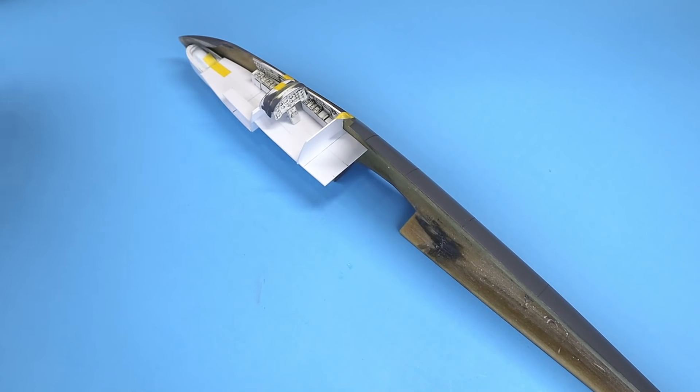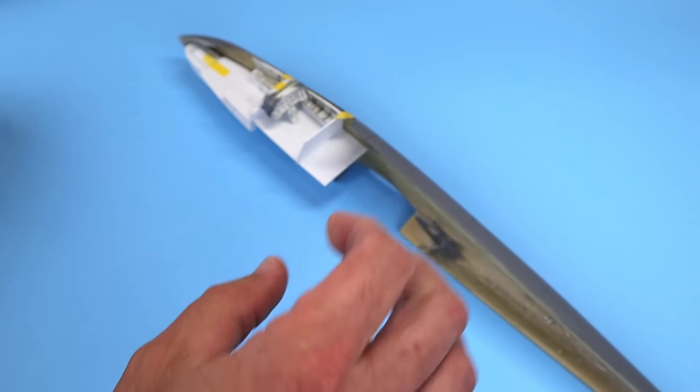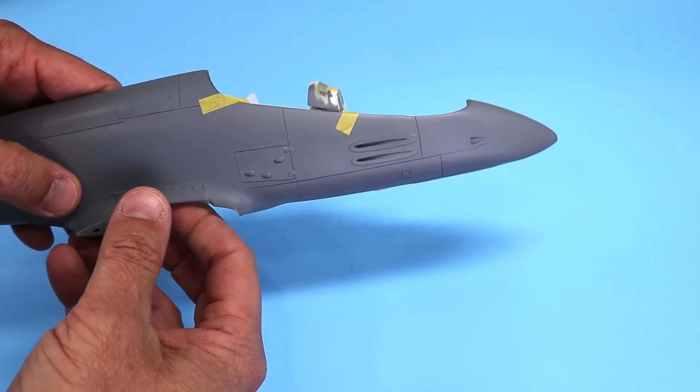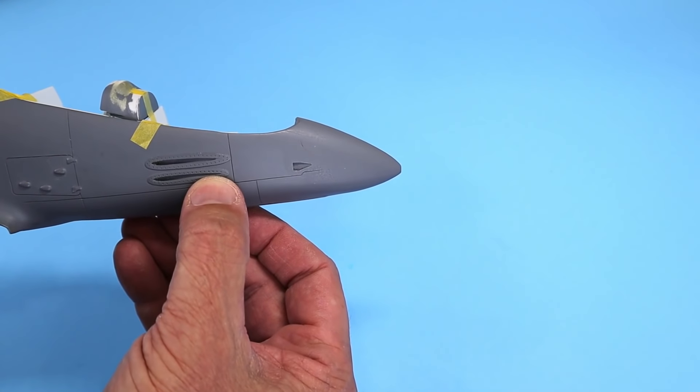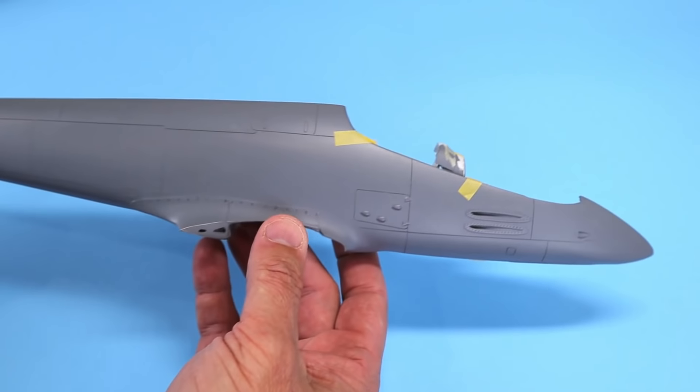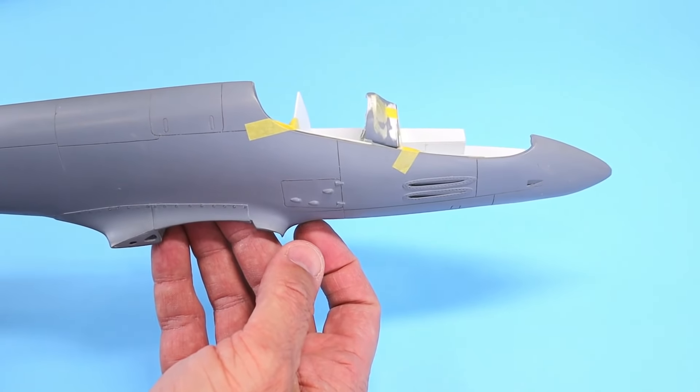...is going to be how to use foil tape like this here to create external details like wing fillets or these gun port covers on this 1/32nd scale scratch-built IA58 Pucara that I'm working on.